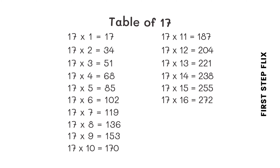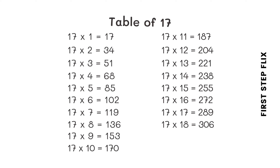17 sixteens are 272. 17 seventeens are 289. 17 eighteens are 306. 17 nineteens are 323. 17 twenties are 340.